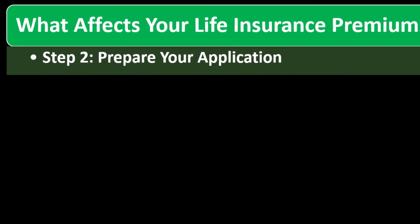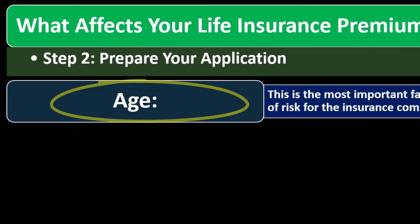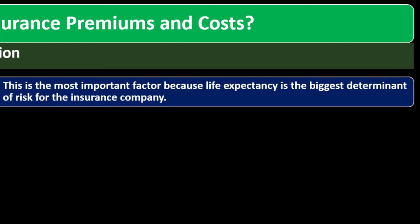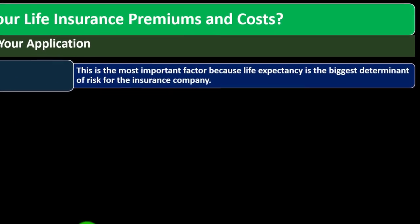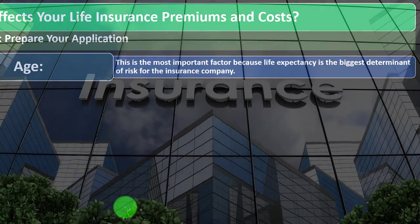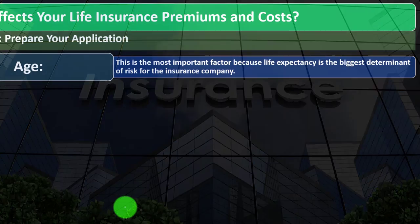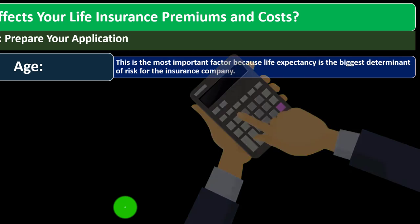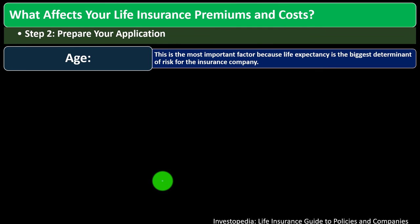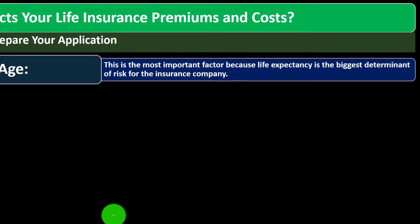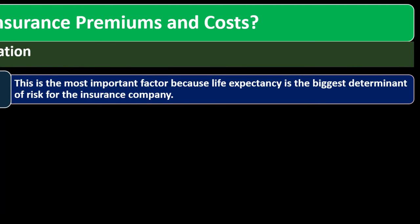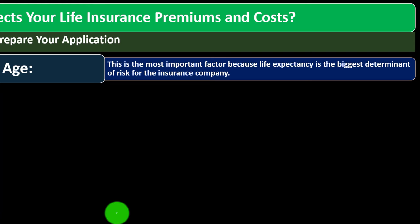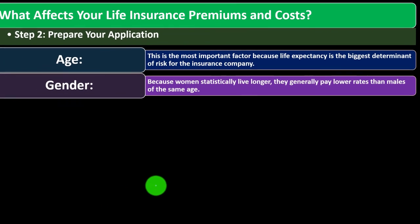Step two: prepare your application. Age is the most important factor because life expectancy is the biggest determination of risk for the insurance company. From the insurance company's side, if they're calculating the likelihood of you dying, if you're 22, it's probably less likely than if you're 70. Of course, a lot of 22-year-olds are kind of reckless, so maybe 30-something would be a safer area — but you see the point.